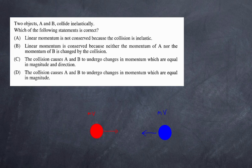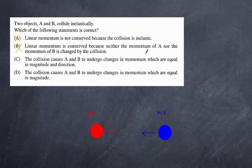Linear momentum is not conserved because the collision is inelastic — incorrect; whether a collision is elastic or inelastic doesn't matter, momentum is always conserved. Option B is wrong because a force on an object will change its momentum. Option C is incorrect because the changes in momentum are in opposite directions, not the same direction. That means our only correct answer is D: the changes in momentum are equal in magnitude only.